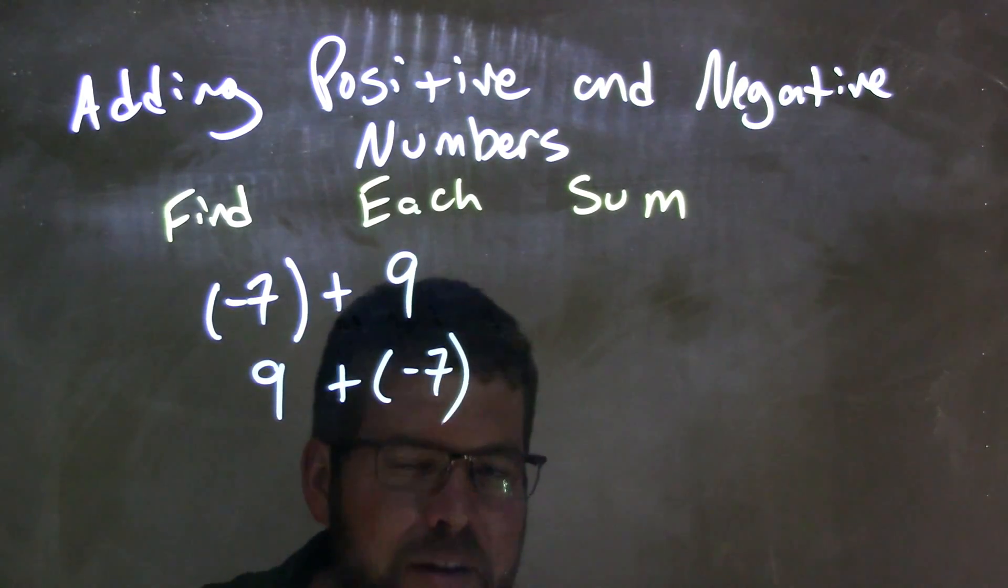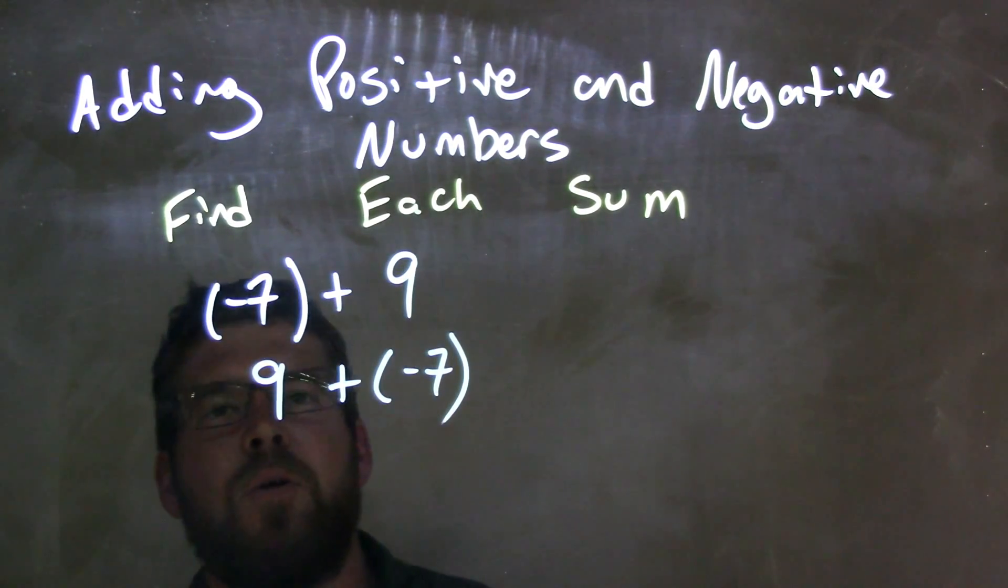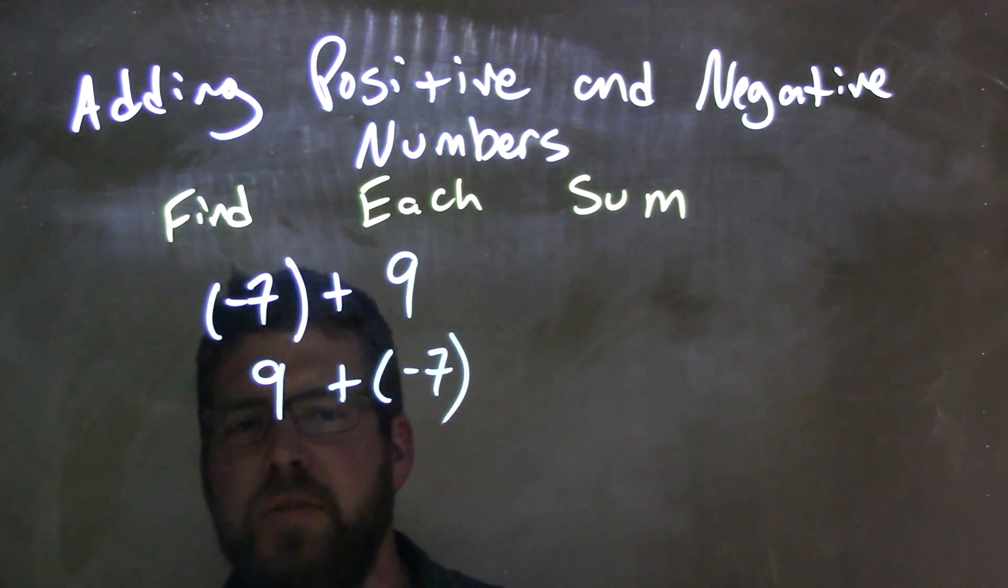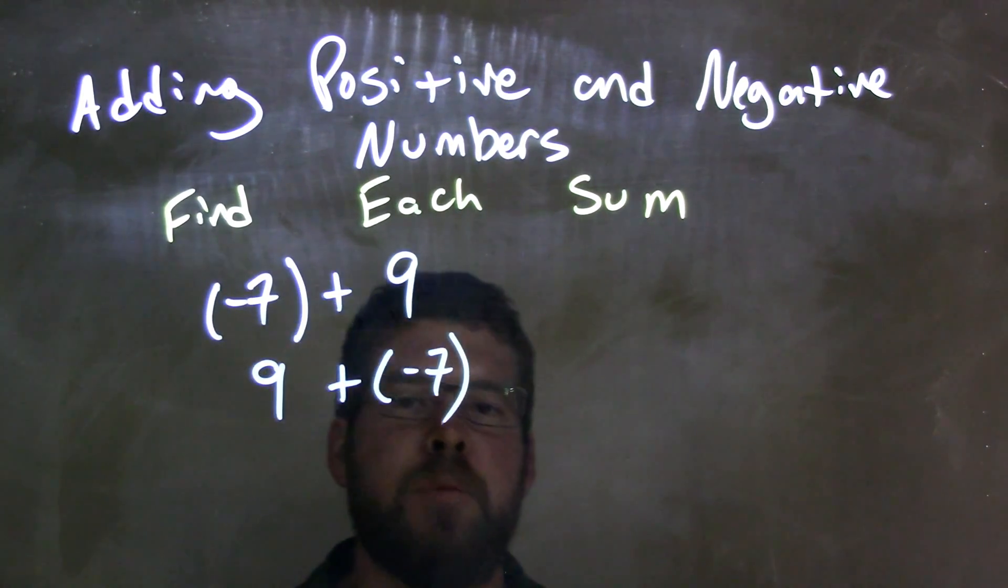Order does not matter with addition, so negative 7 plus 9 is the same thing as 9 plus negative 7, and from there.